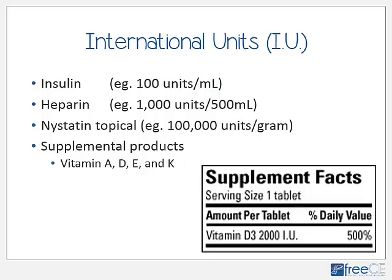Rather than using weight to measure certain products, we use the biological activity or effectiveness of the medicine in the body. Chemically similar drugs may have a different number of units causing the same biological effect. Vitamin D is found as vitamin D3 (cholecalciferol) and vitamin D2 (ergocalciferol) — on labels you'll see these expressed in international units instead of milligrams or grams.